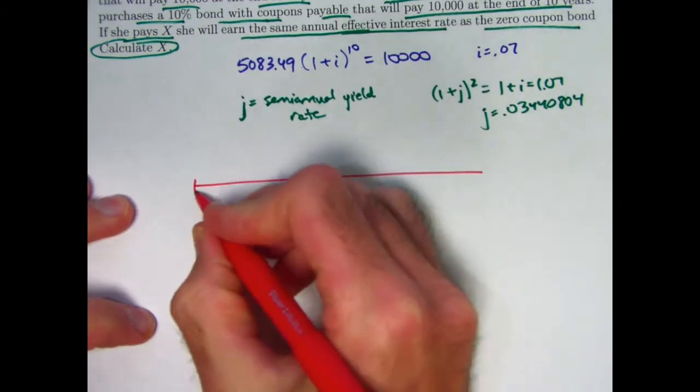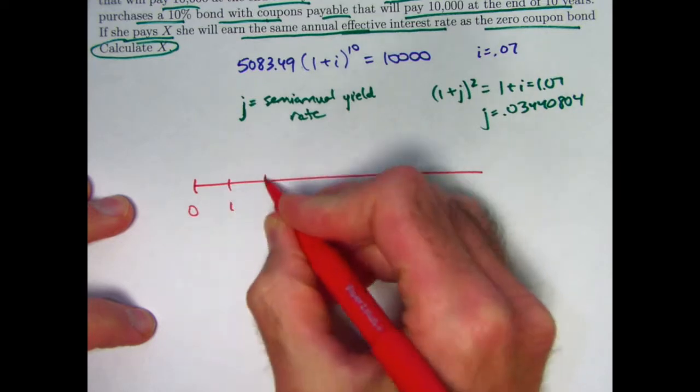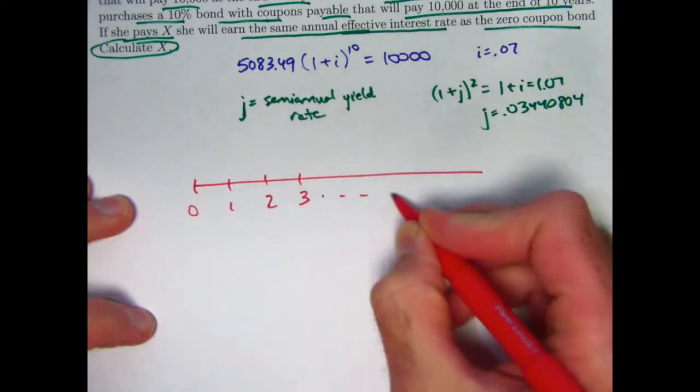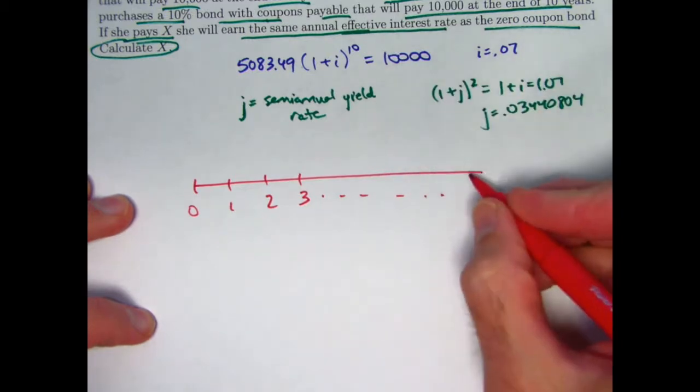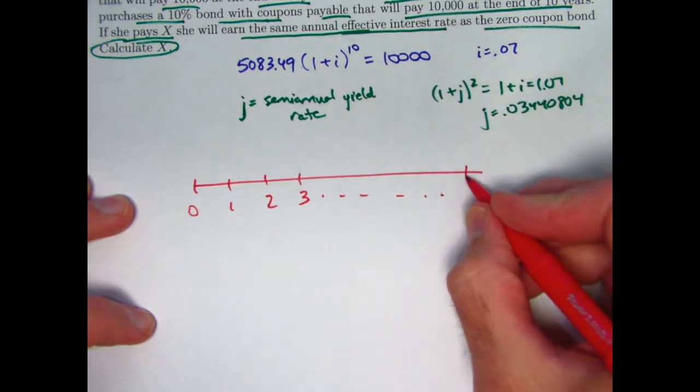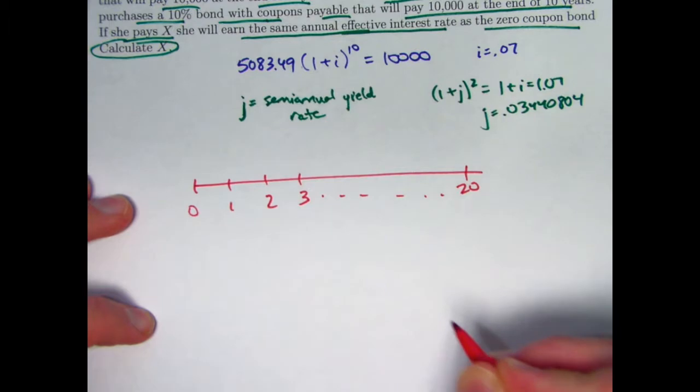J is the semi-annual yield rate for the bond she does buy. But let's think about the actual payments now, the coupons in particular. It's a 10-year bond with semi-annual payments of coupons, so you're going to have 20 periods that are all half years.